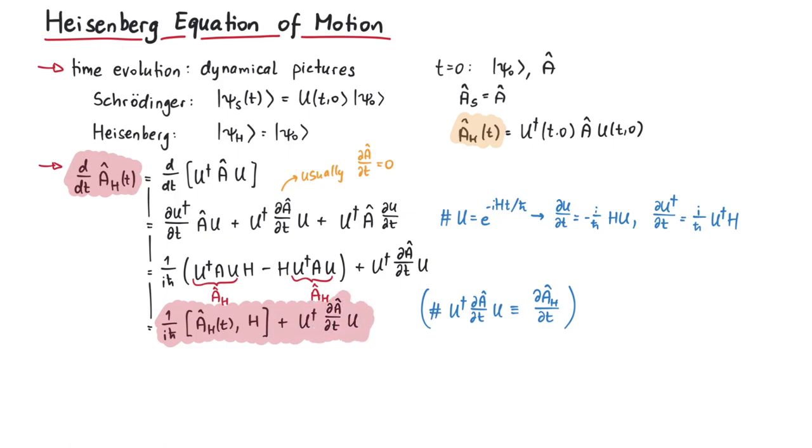And there we have it. This is Heisenberg's equation of motion. As we previously mentioned, usually the last term is zero, so we can interpret this equation as follows.